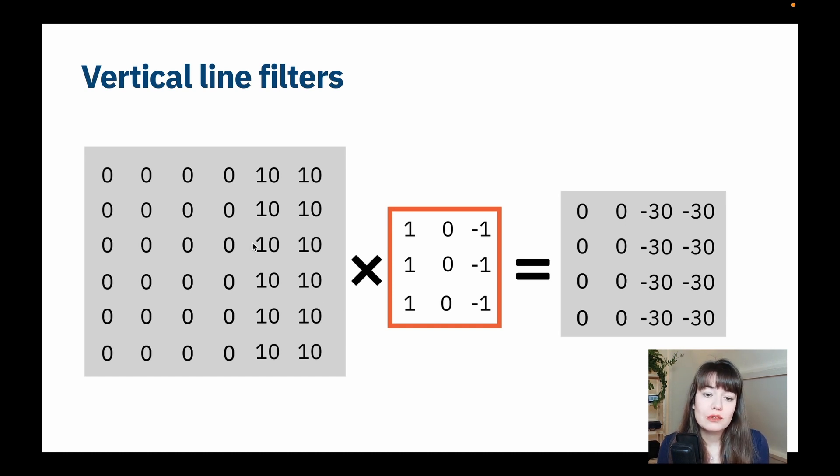And if you don't care about whether the line goes from a darker color to brighter color or brighter color to darker color, you can also just take the absolute values of these resulting matrices to tell you just if there is a line or not. But by having the minus values here, you are making a distinction between whether you're going from dark to bright or bright to dark.